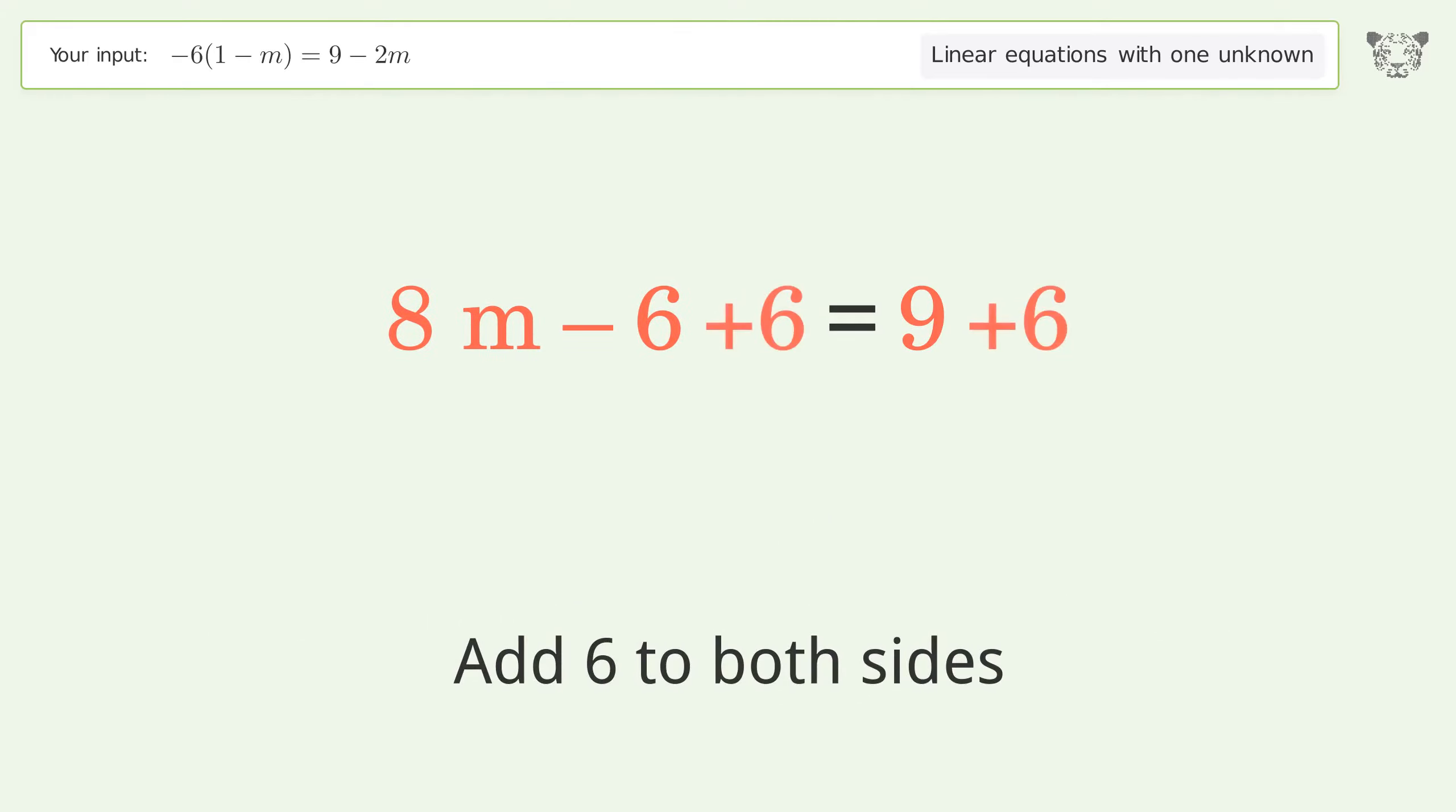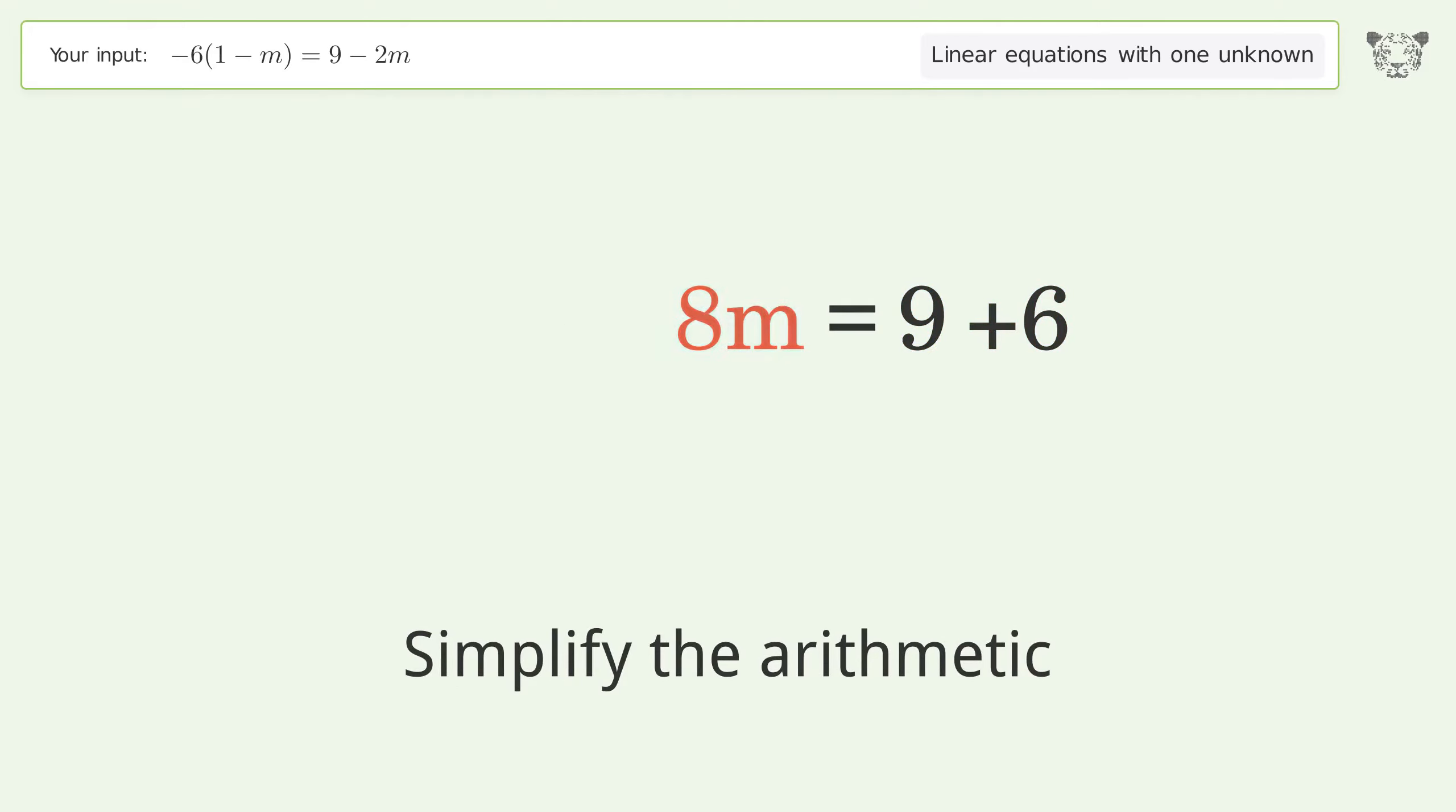Group all constants on the right side of the equation. Add 6 to both sides. Simplify the arithmetic.